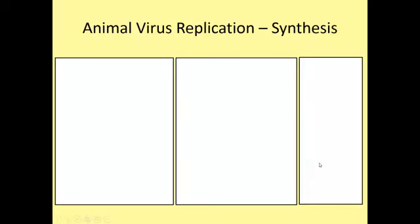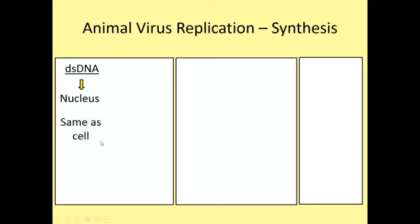Now let's go on to synthesis. The genome is now in the cell and it's going to proceed to make more of all of its parts. Let's start with double-stranded DNA. After it enters the cell, double-stranded DNA goes to the nucleus. It looks the same as the cell's DNA, so it's treated the same way. mRNAs go into the cytoplasm after they're transcribed in the nucleus, the proteins are produced in the cytoplasm off of the ribosomes, and the genome remains in the nucleus.